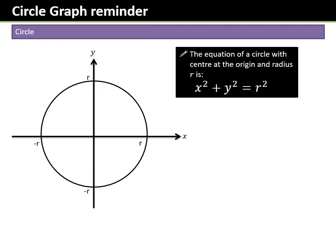Okay, just a reminder from the previous lesson: the equation of a circle is x² + y² = r². We worked out x² + y² = 100 and plotted all our points. When we had 100, the circle crossed at 10, 10, −10, −10.